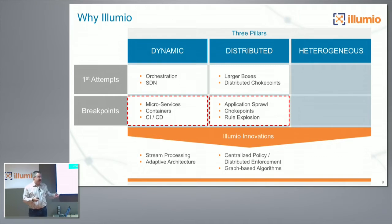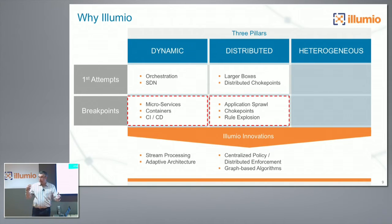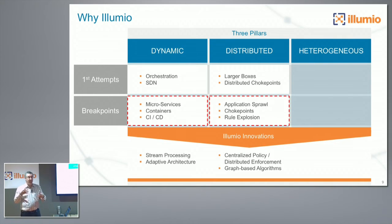Secondly, we don't follow a traditional firewall rule processing engine. This whole system is built around graph theory and algorithms that represent graphs of your network — because that's what a network is: nodes and edges. You need to compute on that graph.